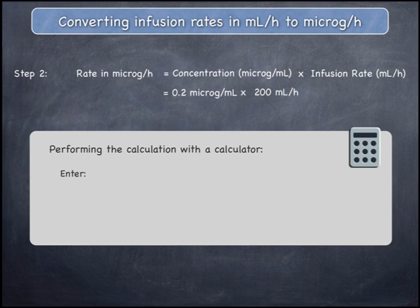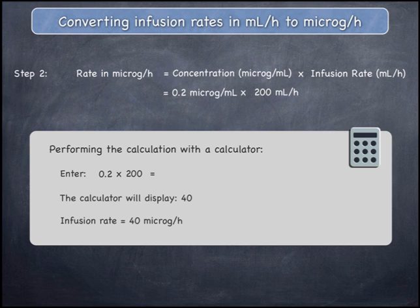To perform this on a calculator, enter 0.2 multiplied by 200 and then press equals. The calculator will display an answer of 40. The final answer is a rate of infusion of 40 micrograms per hour.